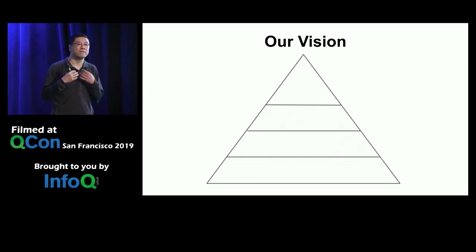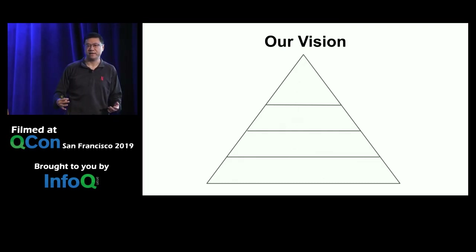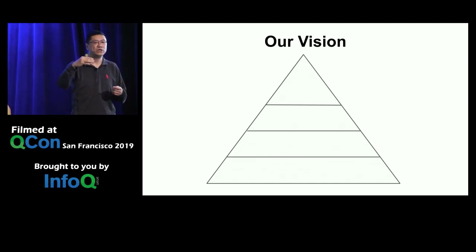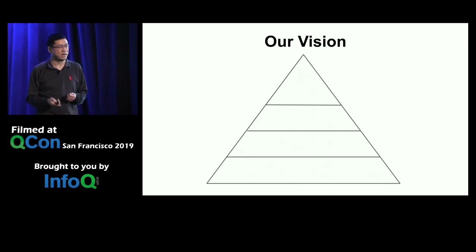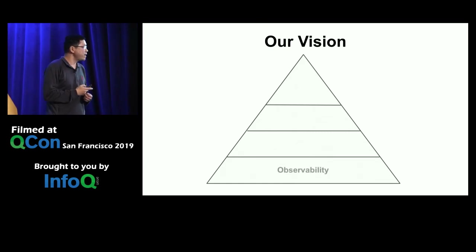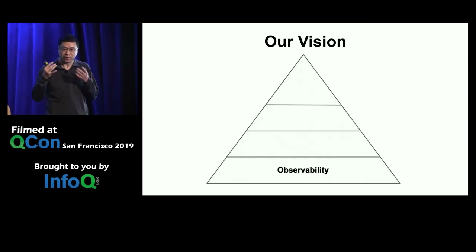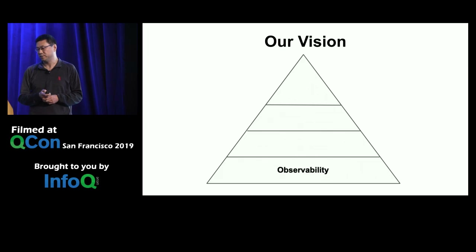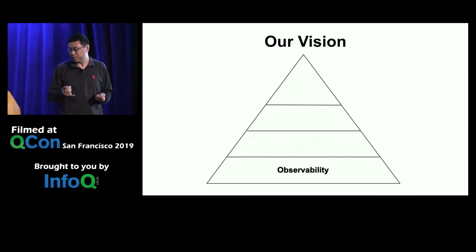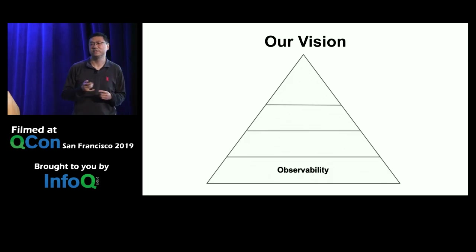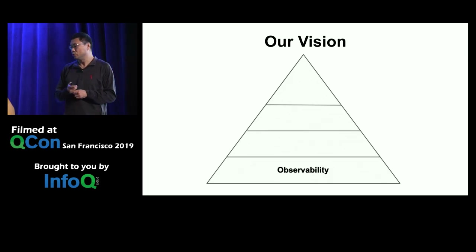Our vision maps into four levels of satisfaction. You start with the basics, and once you satisfy your basic needs you start going up toward more advanced needs. At the bottom, we have observability — you should have clear insights into your product and share those insights with your customers to earn their trust. Without observability, nothing works. If you are short on ideas for how to improve your production readiness, I definitely recommend starting with observability.